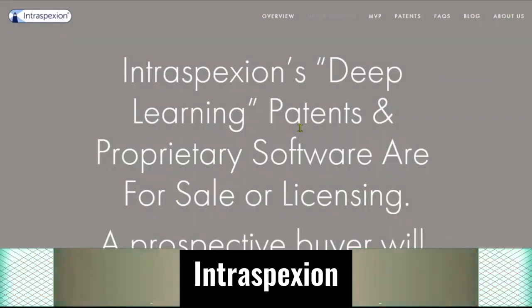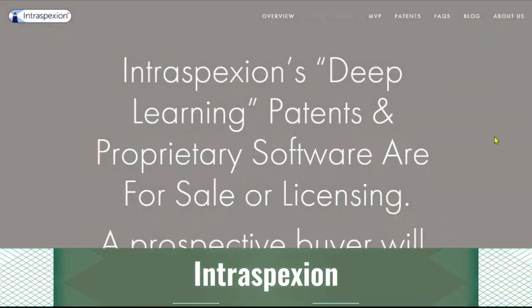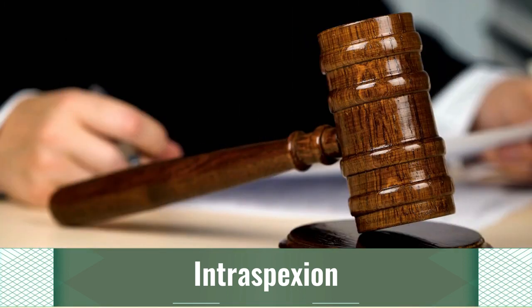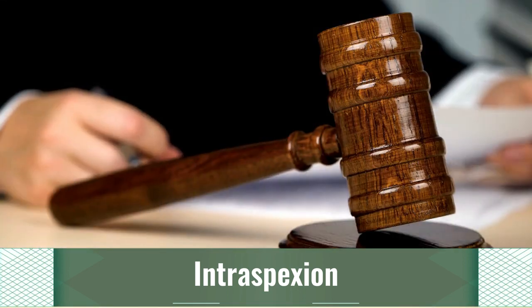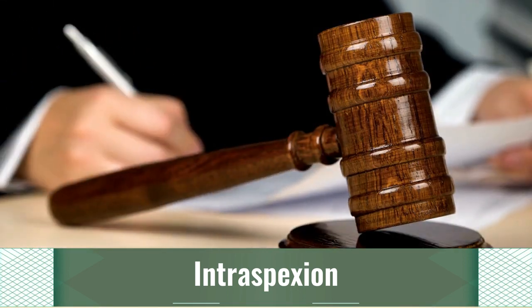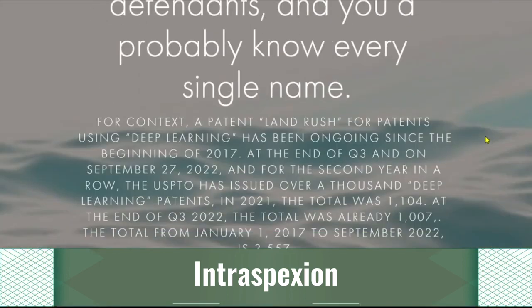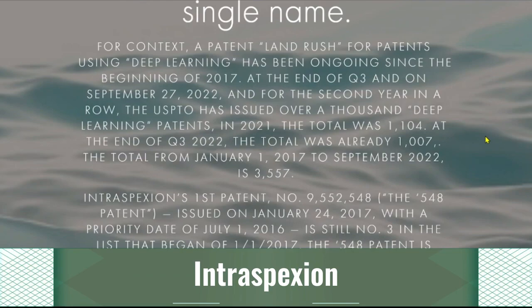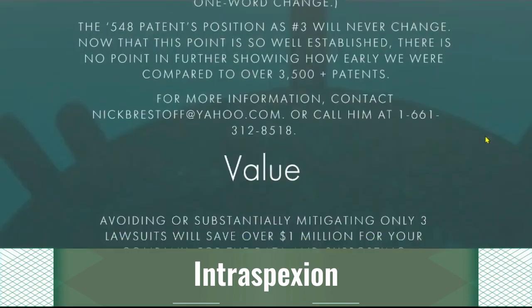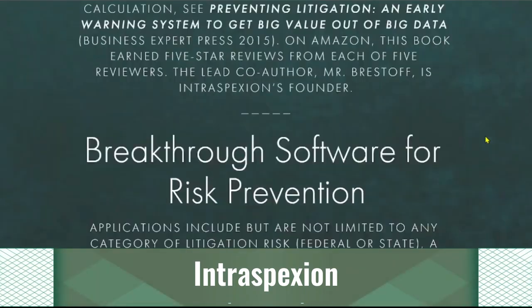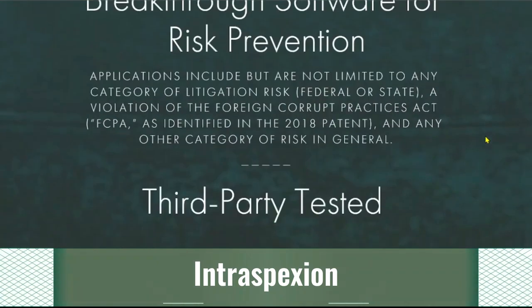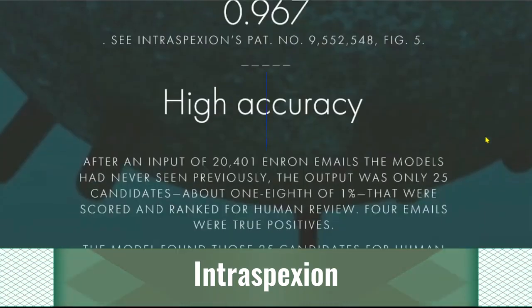Introspection is a proprietary AI solution that uses deep learning to help corporate counsel discover and address legal issues before they become problems. This is done by looking up relevant words and phrases, as well as the relationships between them, to find potential threats and commercial opportunities.